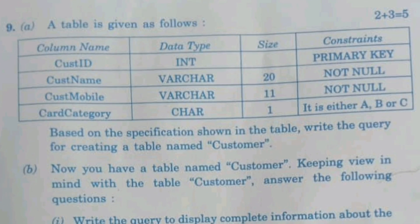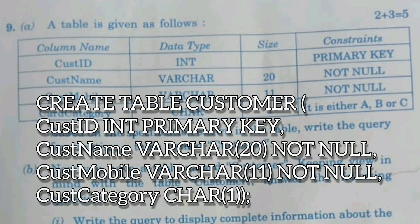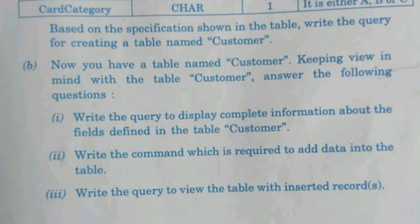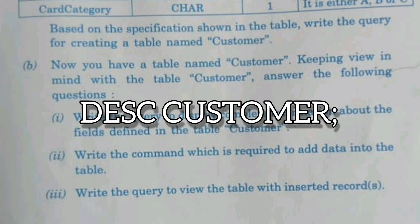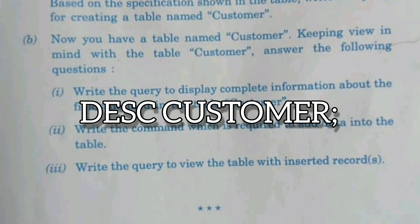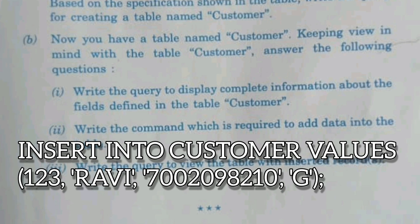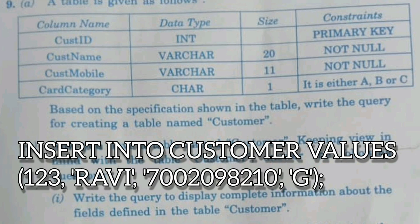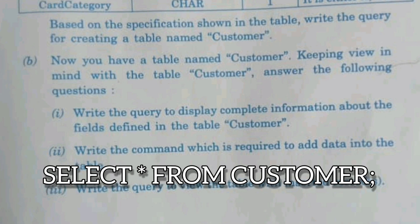MySQL queries: Create a table named 'customer' — CREATE TABLE customer (cust_id INT PRIMARY KEY, cust_name ...) followed by closing bracket and semicolon. To display complete information about the fields: DESC customer. To add data: INSERT INTO customer VALUES (customer_id, 'ABC', customer_mobile_number, customer_category). To view the table with inserted records: SELECT * FROM customer.